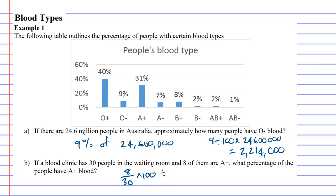So we do eight divided by 30, times 100, which comes out to about 26.7 — round it up, so approximately 27 percent.